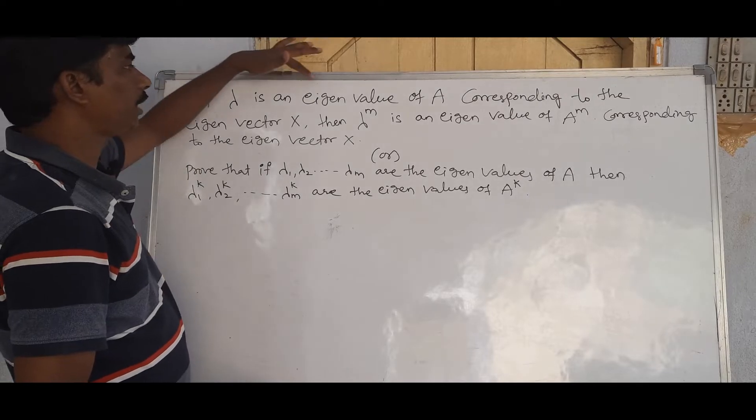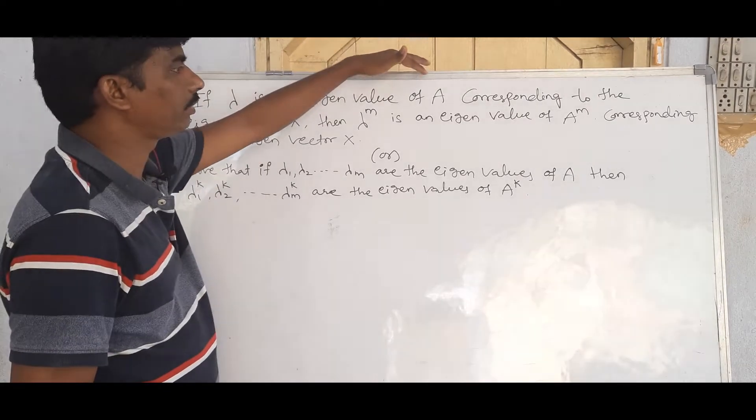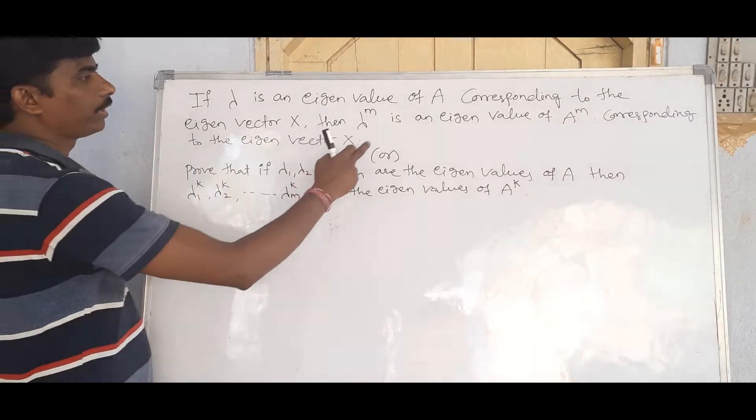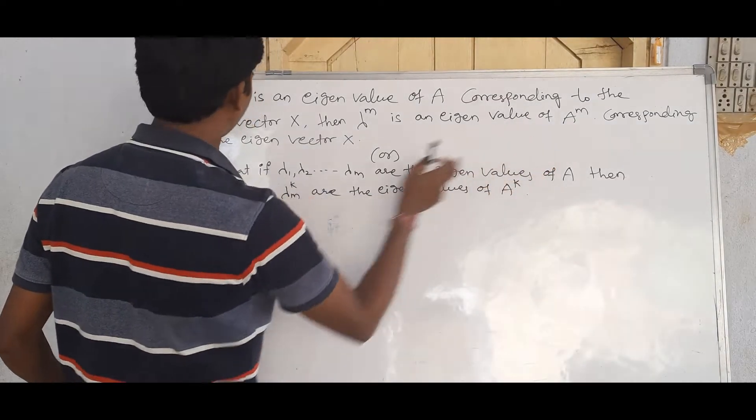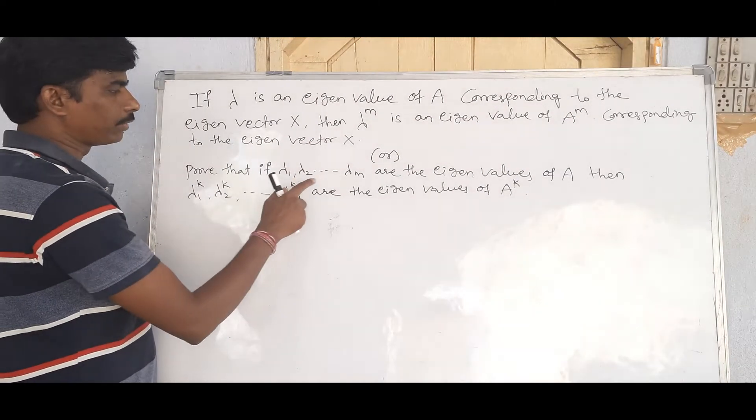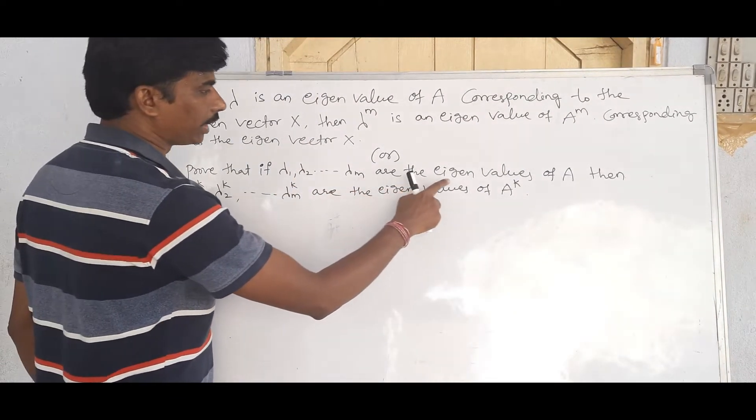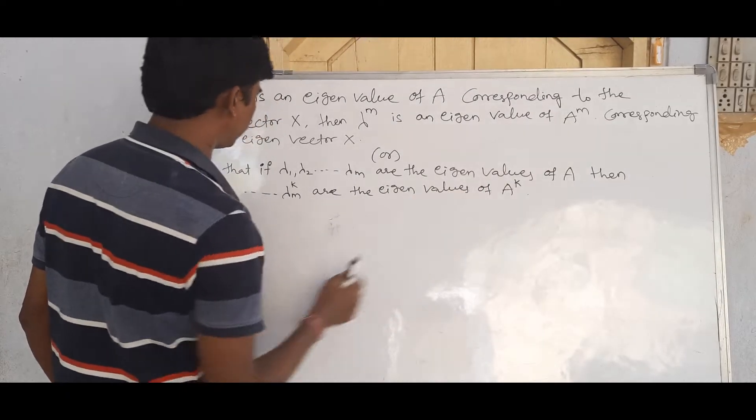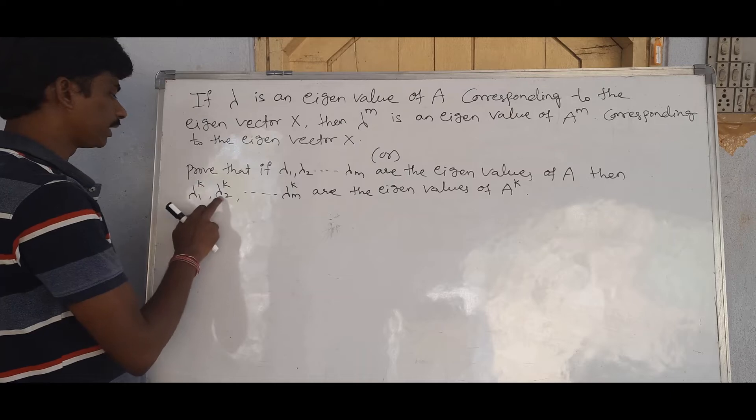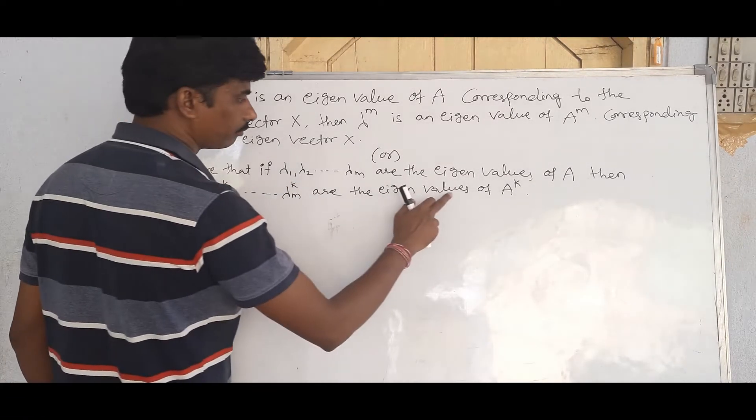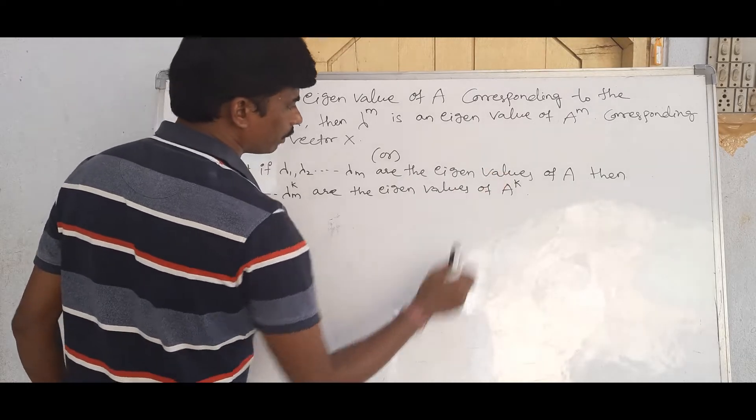If lambda is an eigenvalue of A corresponding to the eigenvector X, then lambda power m is an eigenvalue of A power n corresponding to the eigenvector X. Or prove that if lambda 1, lambda 2, so on lambda m are the eigenvalues of capital A, then lambda 1 power k, lambda 2 power k, so on lambda m power k are the eigenvalues of A power k.